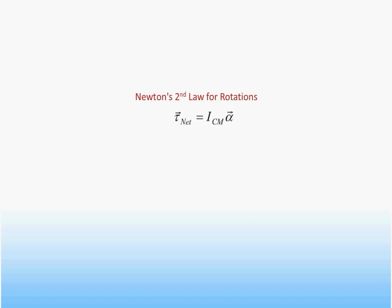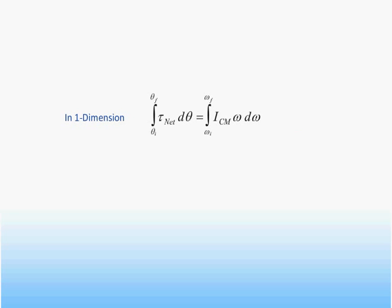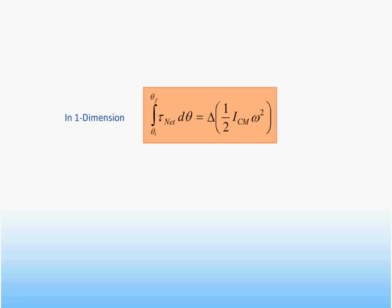The derivation follows closely the previous derivation of the center of mass equation. Namely, if we replace the angular acceleration dω/dt in the rotational equation by the product of ω and dω/dθ, we obtain the equation shown. If we now integrate this equation, we find the relationship we are looking for: namely, that the integral of the torque over the angular displacement is equal to the change in the rotational kinetic energy. This relationship is completely general and will prove to be a powerful tool in solving rotational problems.